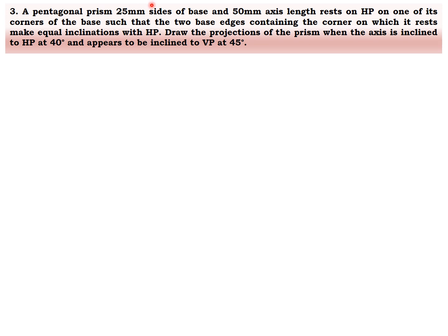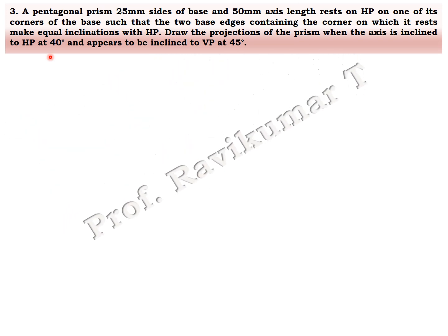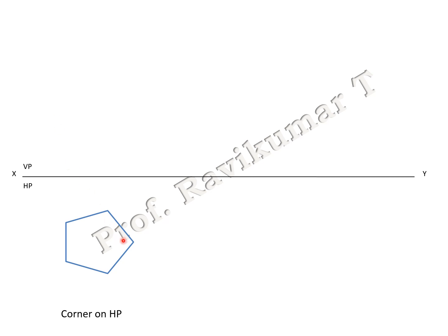The next problem is a pentagonal prism with 25 mm sides and 50 mm axis length, resting on one of its corners. The previous two problems were edge condition problems; this is a corner condition problem. The base and two edges containing the corner on which it rests make equal inclination with HP. When the axis is inclined to HP at 40 degrees — second position — and appears to be inclined to VP at 45 degrees — third position — if the word 'appears' is present, it is a without locus problem. First position: corner towards your right hand side.